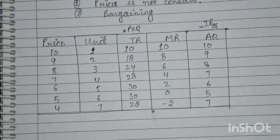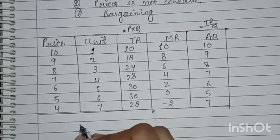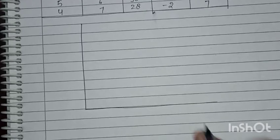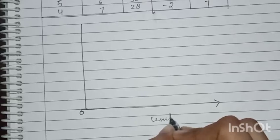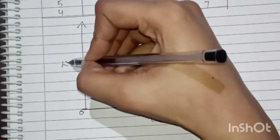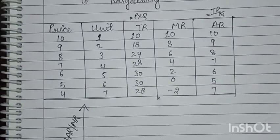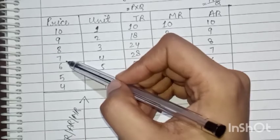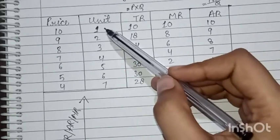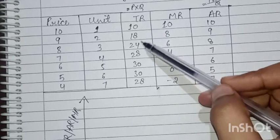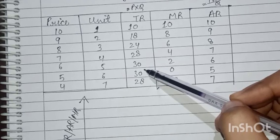Now we draw the graph with units on the X-axis and TR, AR, MR on the Y-axis. Price is falling: 10, 9, 8, 7, 6, 5, 4 — as price falls, units of commodity increase. TR values are 10, 18, 24, 28 — TR first increases, then becomes constant at 30, then decreases.